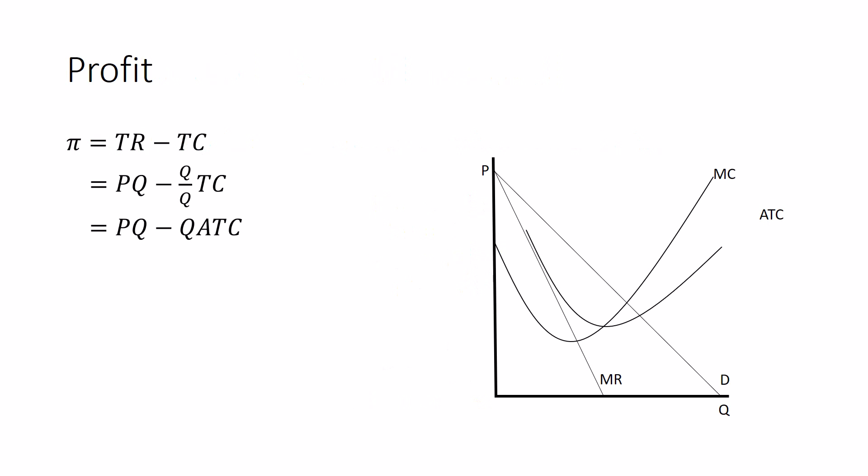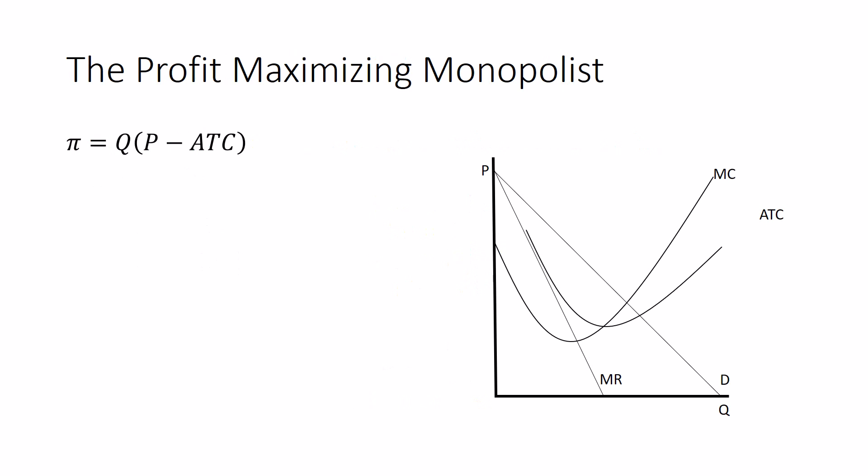And then I can factor out the Q, and then Q times P minus ATC. That is the equation for profit that is most helpful on this graph, because the average total cost curve is one that we have. The price is something that we have.